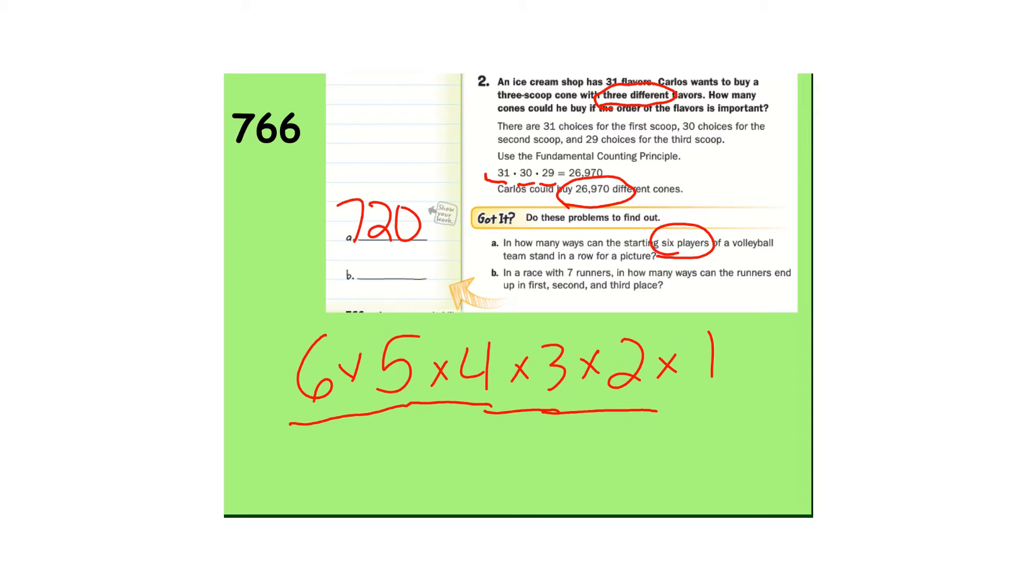Okay, part B. In a race with seven runners, how many ways could the runners end up in first, second, and third place? This is important here. So we're not going all the way down to one. We need a first place, a second place, and a third place. So there's seven people that could have got first. That would leave six for second, which would leave five for third. And six times five is 30. So 30 times seven is 210.